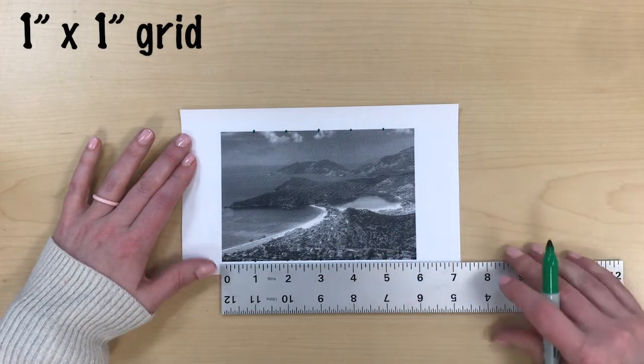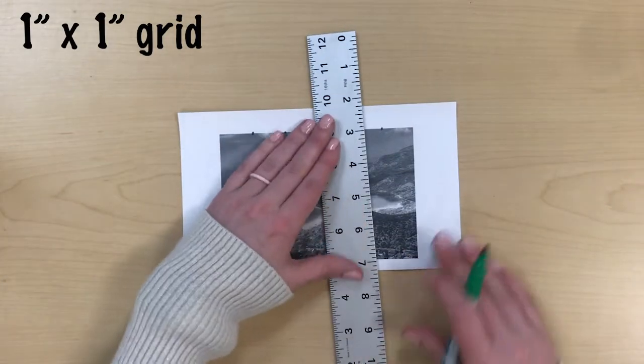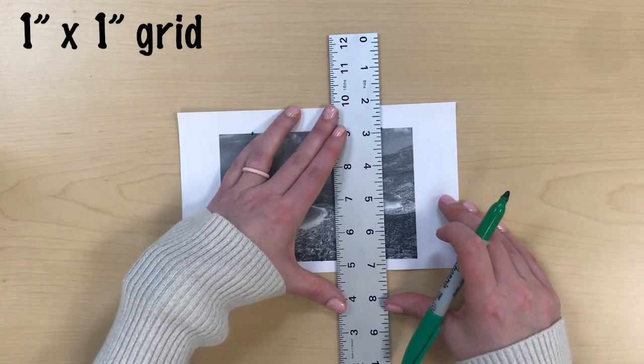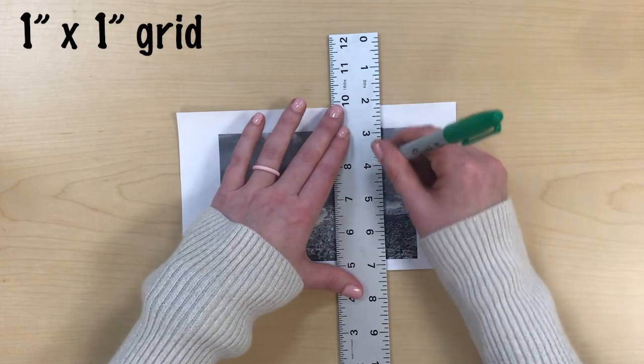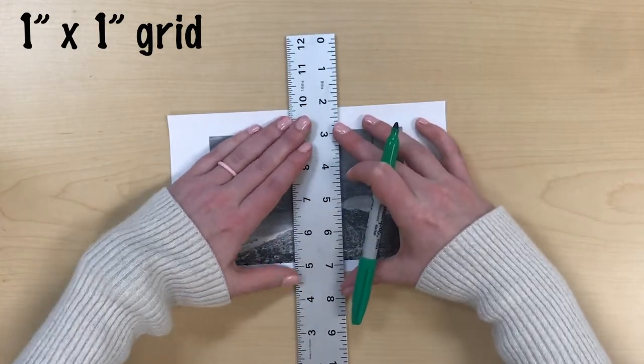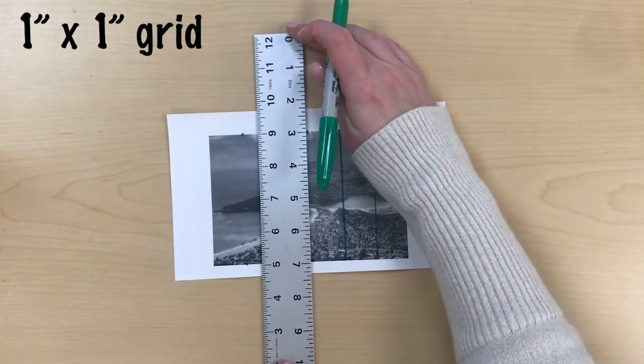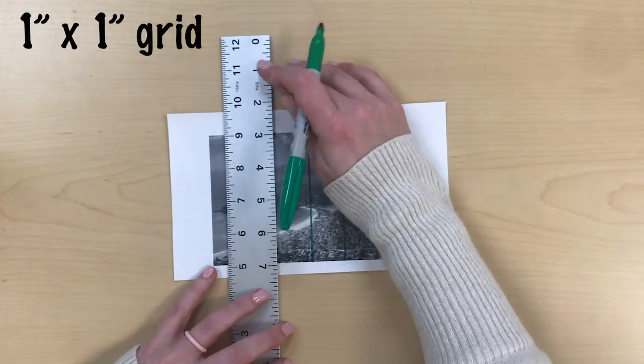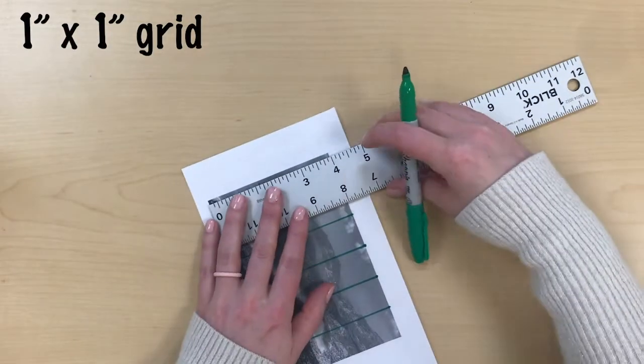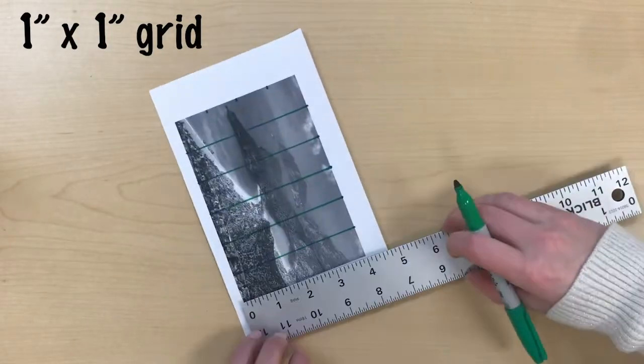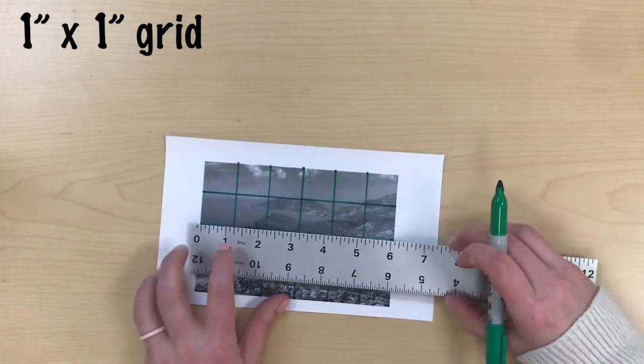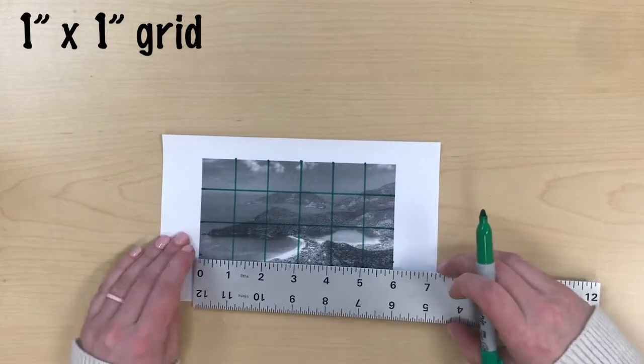I use my ruler to line up those two marks, measure twice, draw it once and carefully draw the line. I'll repeat this process along the side making marks at one inch, lining them up and drawing the line.